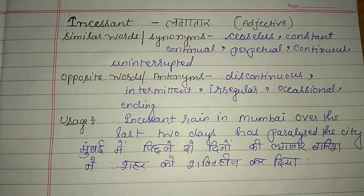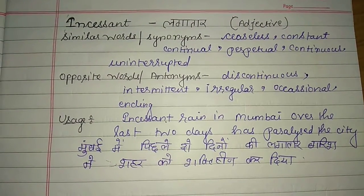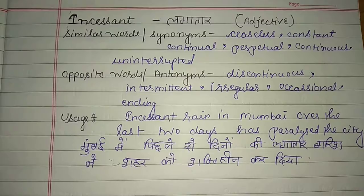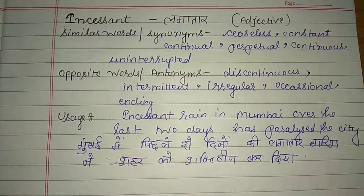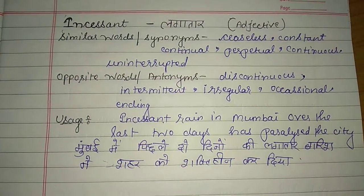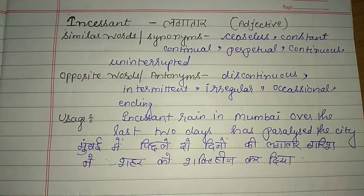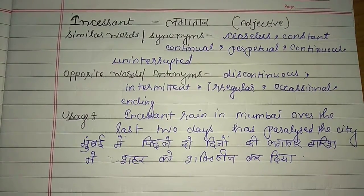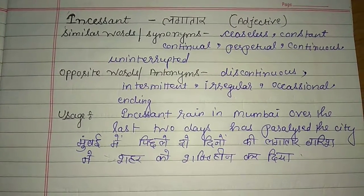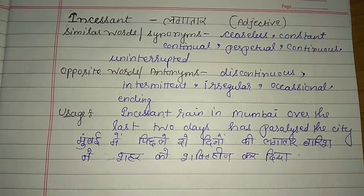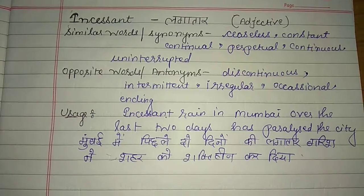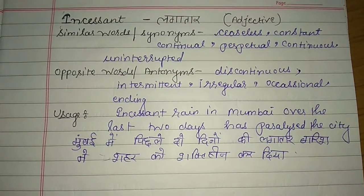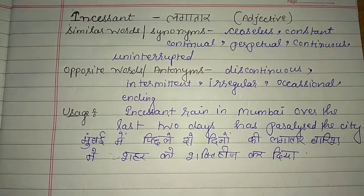Usage example: 'Incessant rain in Mumbai over the last two days has paralyzed the city.' Mumbai में पिछले दो दिनों की लगातार बारिश ने शहर को शक्तिहीन कर दिया. यहाँ पर हमने Incessant का use किया है, उसको adjective की तरह यूज किया है.